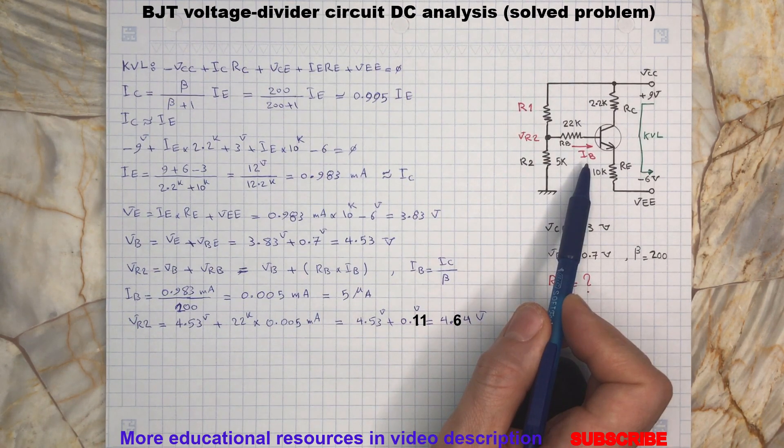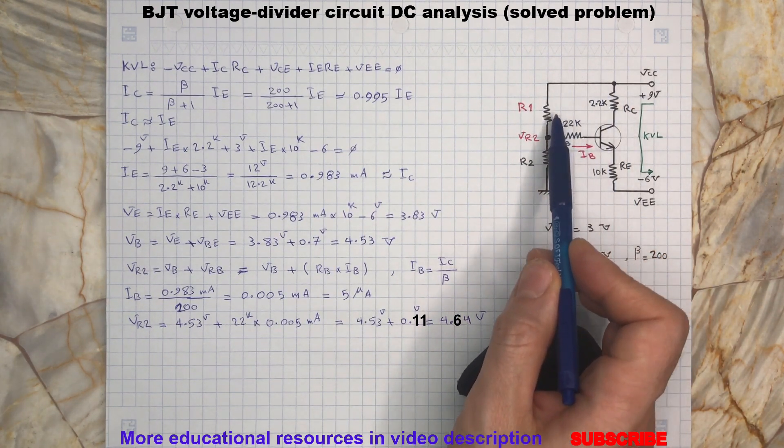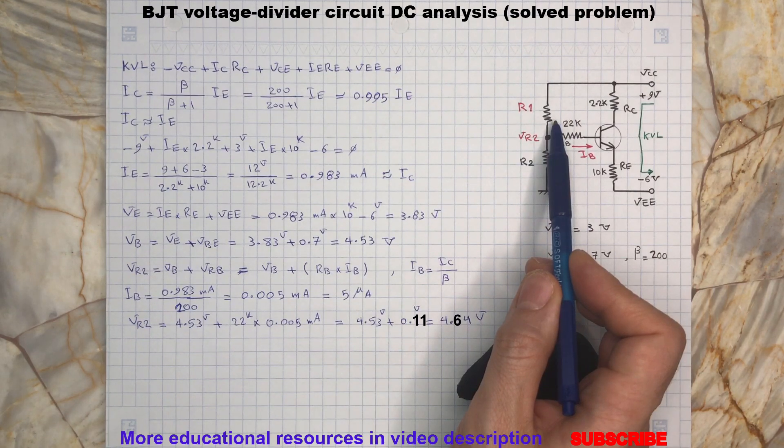Now since IB is very small we can neglect it and assume all the current which comes from the positive supply flows through the R1 and R2.